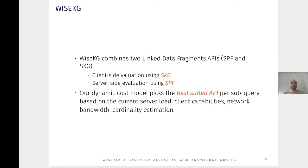YSKG combines two Linked Data Fragments APIs that enable star-shaped subqueries: SmartKG, which processes star queries on the client side, and SPF, which processes star queries on the server side. The dynamic cost model picks the best-suited API per star subquery based on the current server load, client capabilities, network bandwidth, and the cardinality estimation of the star pattern.